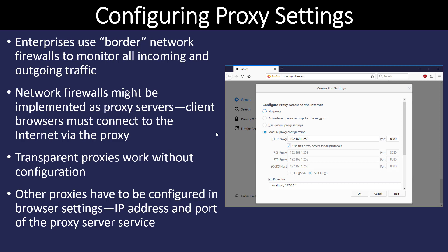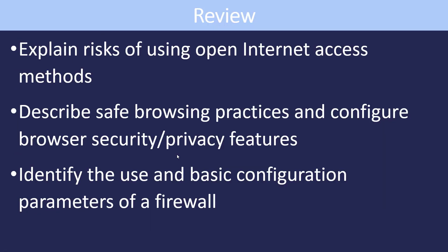A large enterprise network is going to use a border firewall, which is its own individual appliance with many additional settings. Part of this may include a proxy server, which monitors and captures all internet traffic going back and forth, and can also act as a content server. If your enterprise uses a proxy server along with a firewall, you may have to go into your browser or computer settings and tell it where the proxy server is. In summary, we looked at the risks of open internet access, safe browsing practices, how to configure our browser, and the use and basic configurations of a firewall.